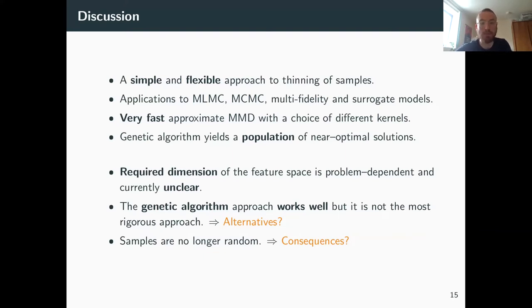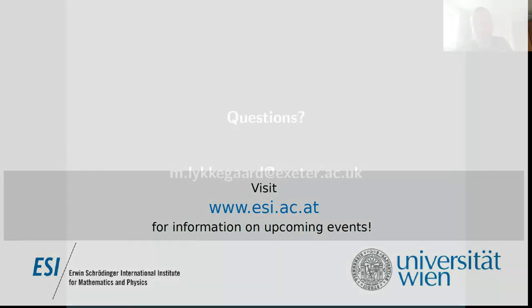Some of the open questions is that it's not quite clear what dimension of this random feature space we need. I think it's very problem dependent because it depends how the samples are really distributed. Another thing is the genetic algorithm, it works really well but it is not the most rigorous approach, so I've been thinking about what kind of alternatives there could be. Plus, it was just like a thought I had the other day that the samples are actually no longer random when we optimize it this way, and I'm not quite sure what kind of consequences that might have for, let's say, multi-level estimators. So that's it, thank you.